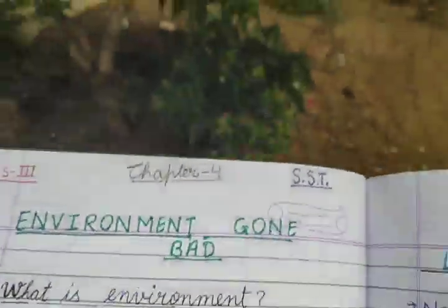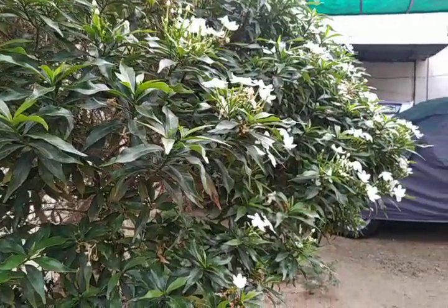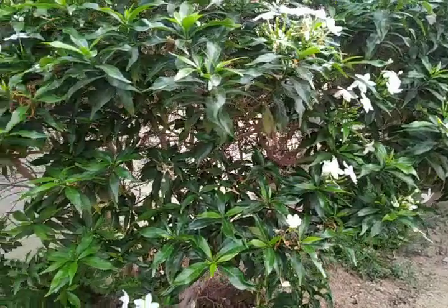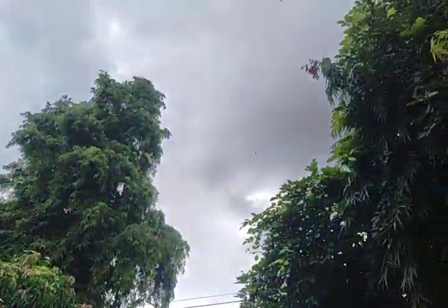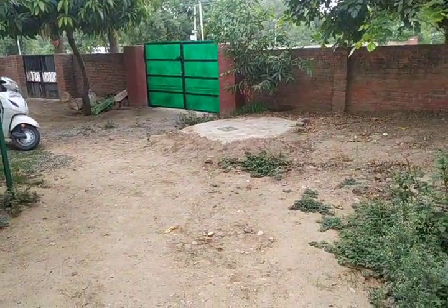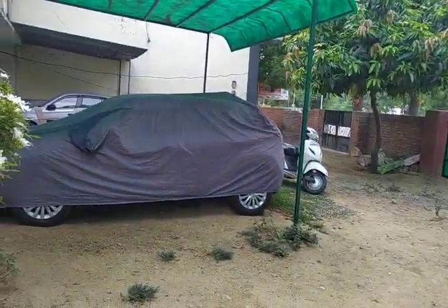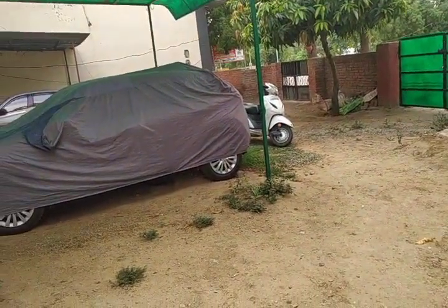In our environment, some things are living, like plants, animals, birds, and insects — they all are living. And some are non-living, like this stone, the sky above, soil, water, this car, our house — they all are non-living.